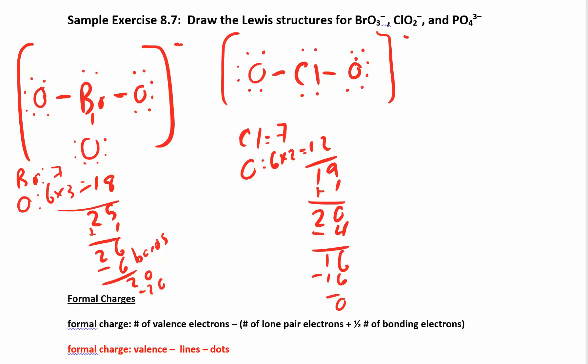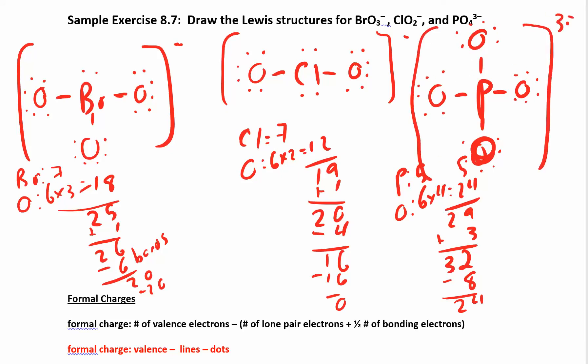And the last one, the phosphate ion PO4^3-, looks like that. Phosphorus has five, oxygen has six times four, 24 and five is 29, plus three gives us 32. So I have 32, I already used up eight, so I have 24 left: two, four, six, eight, ten, twelve, fourteen, sixteen, eighteen, twenty, twenty-two, twenty-four. And so that satisfies the octet rule for everybody.